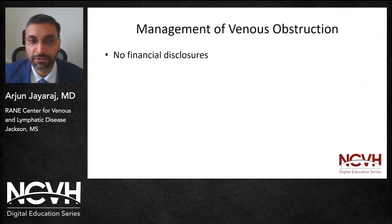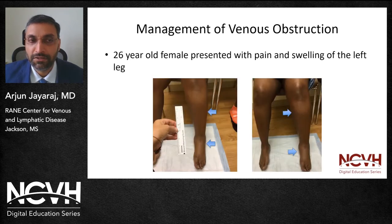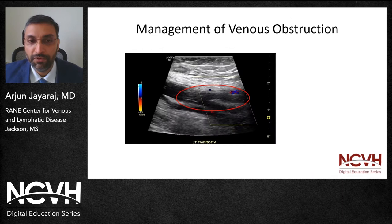I have no financial disclosures pertaining to this talk. Venous obstruction can be grouped as being acute or chronic, involving the native vein or a previously placed stent. Let's consider the scenario of a 26-year-old lady who presented to us with pain and swelling of the left lower extremity. Venous duplex revealed extensive thrombus burden within the iliofemoral segment.